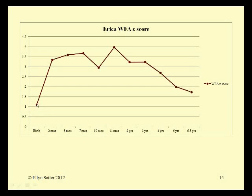She plotted at the one Z-score, 85th percentile. And then by the time she was two months old, she went way up to almost the three and a half Z-score. At that point, her weight leveled out until it began going down between three and six and a half years.